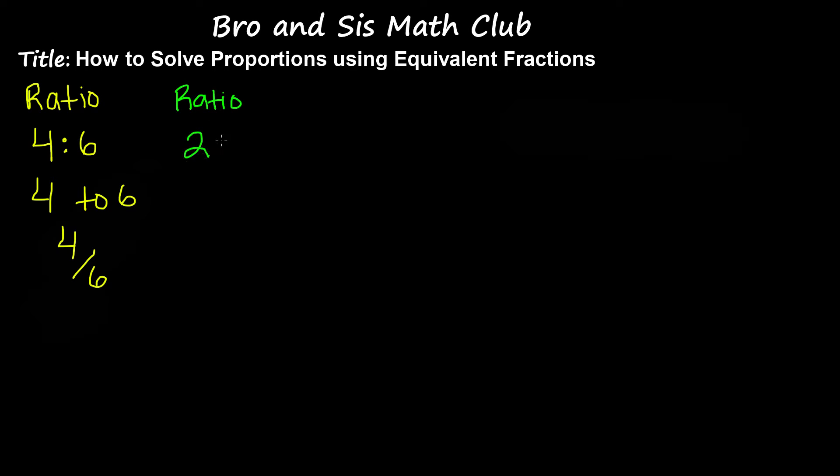This ratio is 2 to 3. We can represent this also by 2 colon 3 or 2 over 3, which all of these are pronounced as 2 to 3.